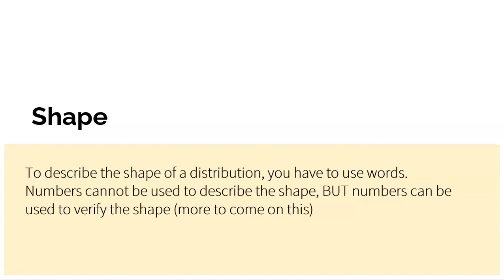To describe the shape of a distribution, you have to use words. There are no numbers — you can't say that shape's a six or a 7.5. We don't have a number system to measure shape. We do have numbers that can talk about center and spread, but numbers can't specifically tell you what the shape is. Later on, we'll learn that numbers can be used to verify the shape.